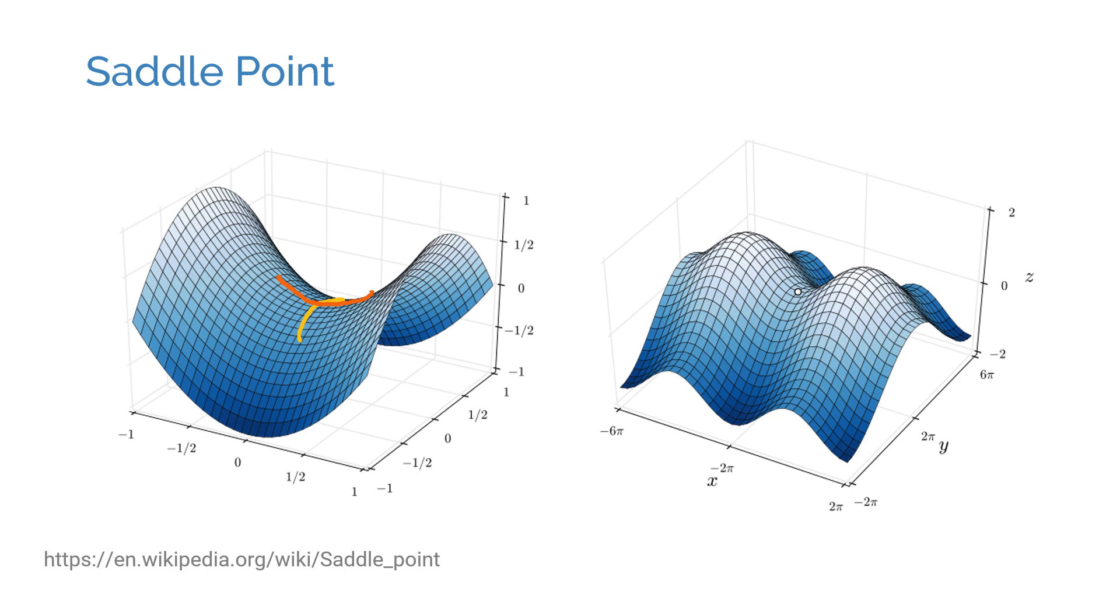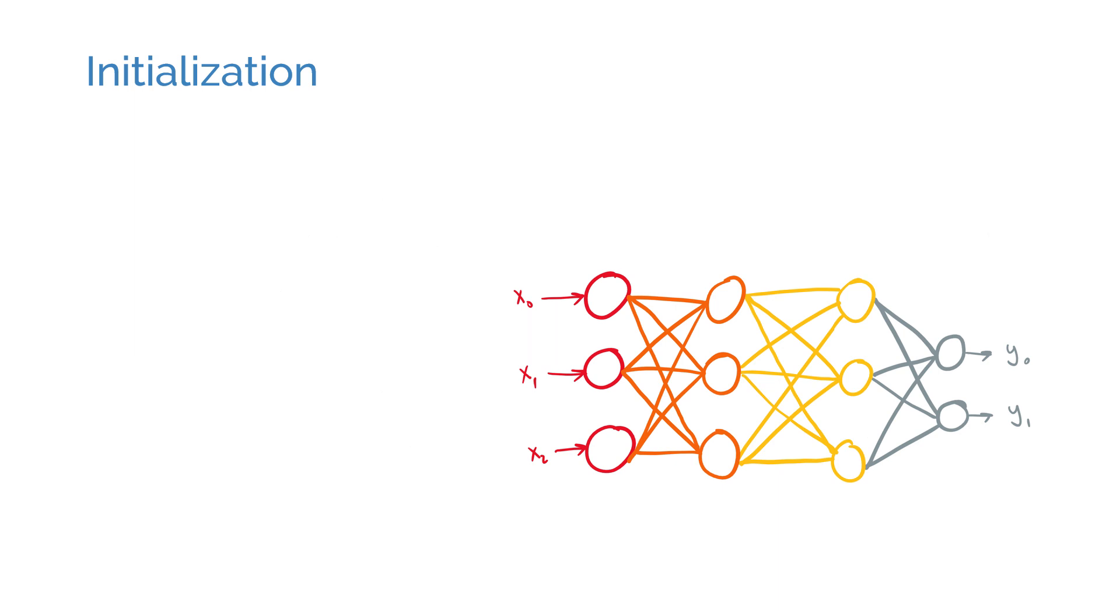Let's go back to weight initialization. The initial state of a neural network can have an effect on how fast the model converges, how good the converged point is, or if the model converges at all. So how should we choose the initial values? There is no definite answer, but there are some heuristics that might help.